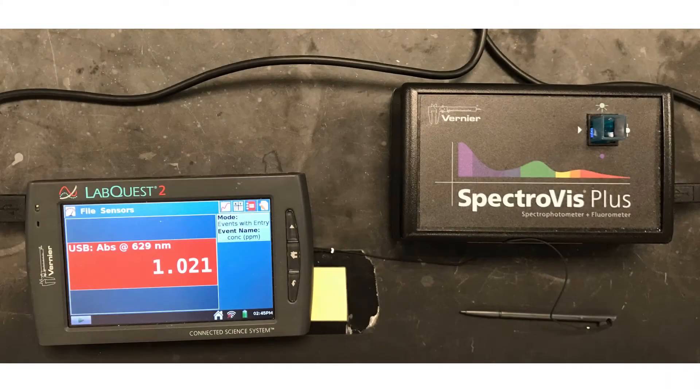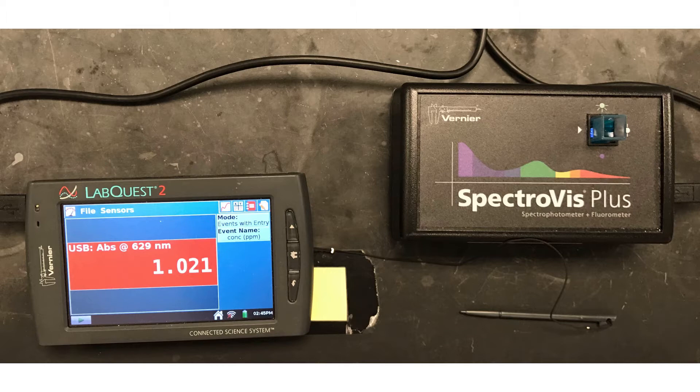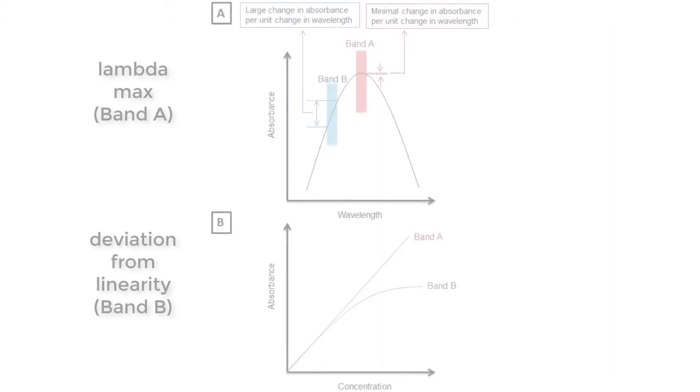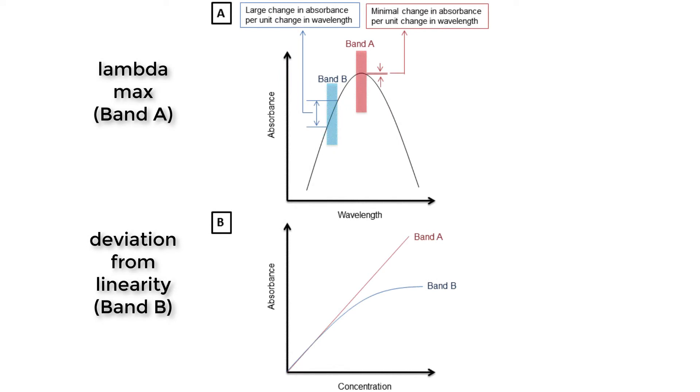If we choose the darkest sample, you'll see that the sample is giving an absorbance of 1.021 at 629 nm. This absorbance is outside of the linear range. The instrument chose 629 nm as the wavelength of maximal absorption. It is here that we see a minimal change in absorbance per unit change in wavelength. Thus, when we monitor absorbance as a function of concentration, we see a linear relationship.